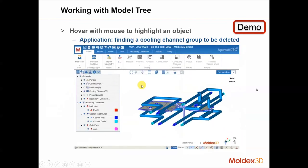And when will this function be useful? For example, when you have many cooling channel groups in your model, and you want to redesign one of them, then how do you find the right one to delete and redesign?